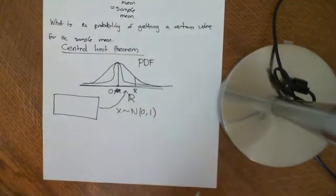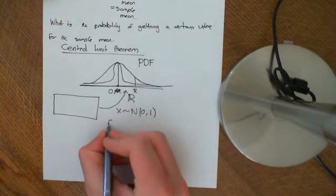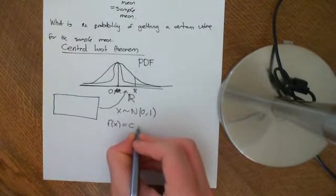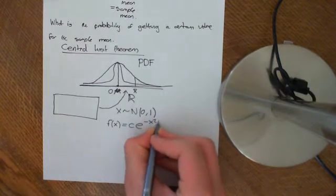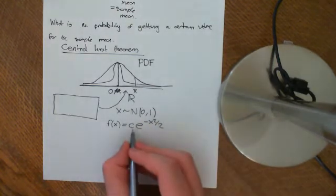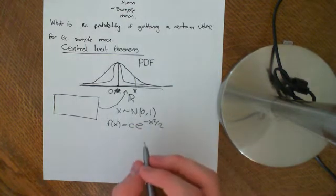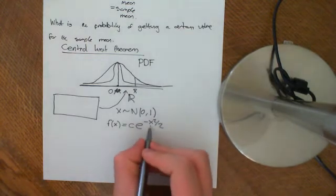And the PDF, little f of x, looks like some constant times e to the negative x squared over 2. OK, and we want to like to work out what this sum constant has to be. And the way that we can work out what that sum constant has to be, and firstly, let's just get a feel for why this looks like a bell-shaped curve.